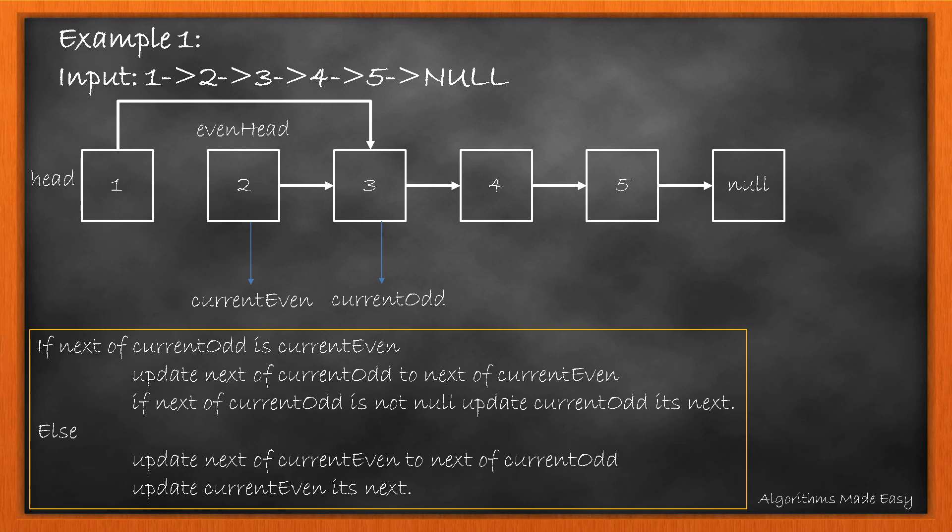Now again checking if currentEven or currentOdd is null. As they are not, we enter the loop. We check if next of currentOdd is equal to currentEven. As it is not, we move to the else part.